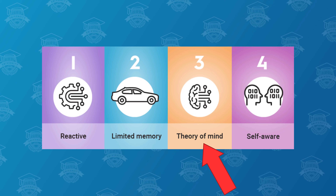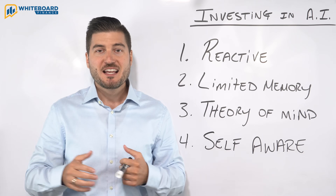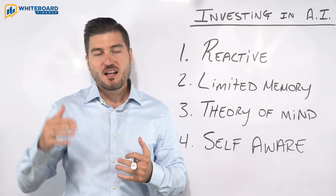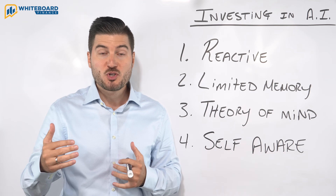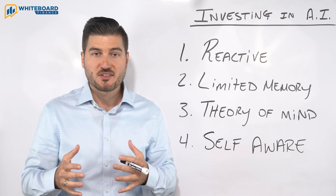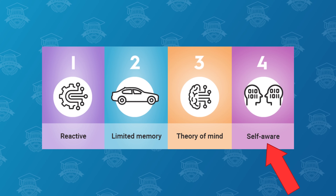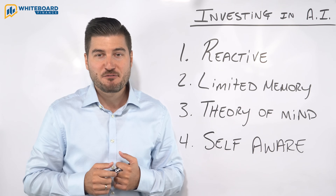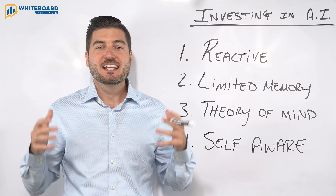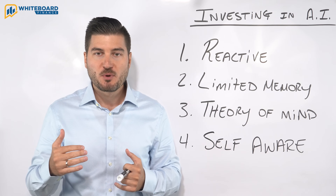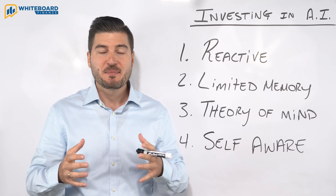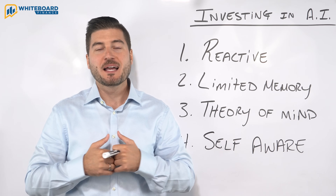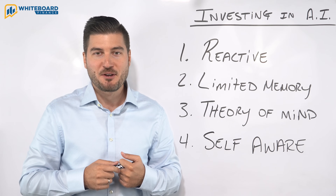The third type of AI is theory of mind, which refers to AI with advanced decision-making capabilities, almost similar to humans — they can understand and remember emotions and adjust their behavior accordingly. And finally, there's self-aware AI, considered the most sophisticated form. It describes machines that are aware of their own emotions and the emotions of those around them — kind of like the movie Ex Machina, if you remember that one.